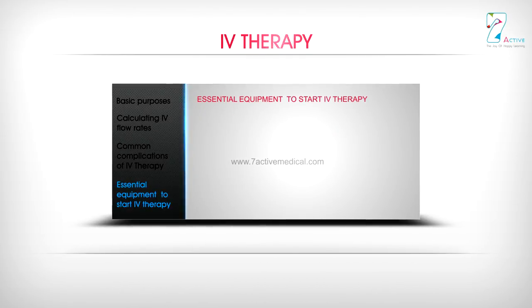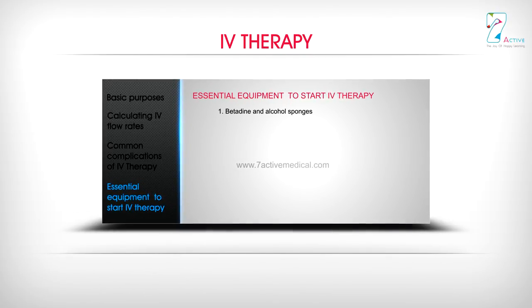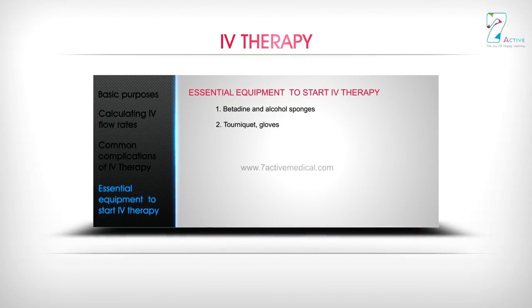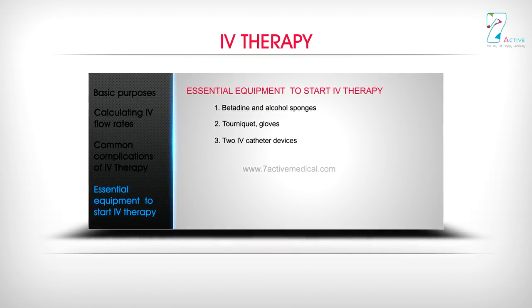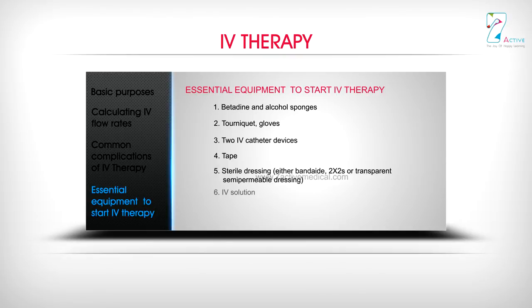Essential equipment to start IV infusion: Betadine and alcohol sponges, tourniquet, gloves, two IV catheter devices, tape, sterile dressing — either a Band-Aid, 2x2s, or transparent semi-permeable dressing — IV solution, tubing, and pole. To be continued.